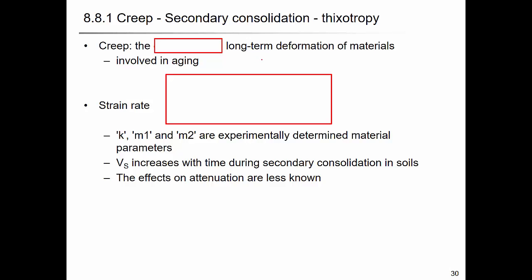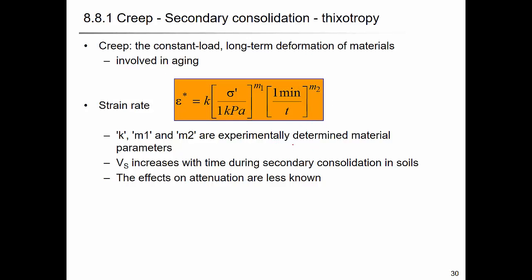For the creep effect, the strain rate can be expressed by a stress term with exponent m1 and a time-dependent term with exponent m2, where k, m1, and m2 are empirically determined material parameters.